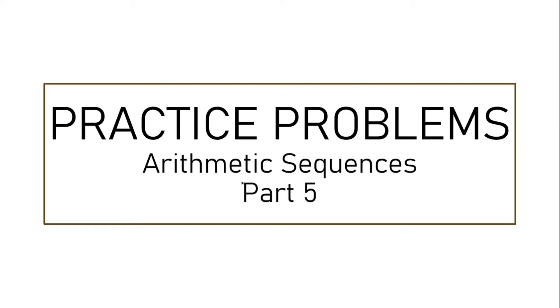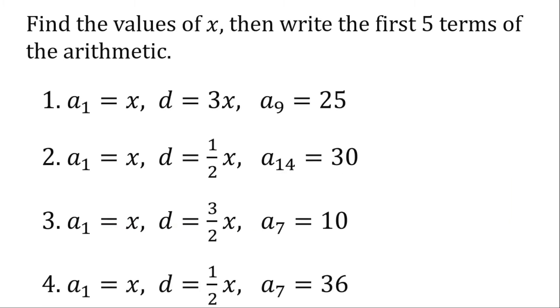Now let's look at the problem. Find the value of x, then write the first 5 terms of the arithmetic sequence. We're given the following, wherein we need to find the variable x, given only this information. Then we're going to find the first 5 terms.